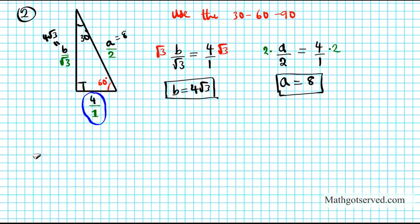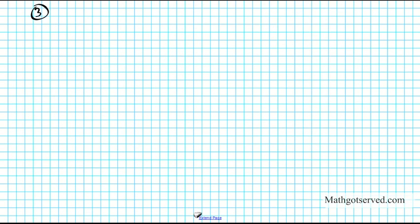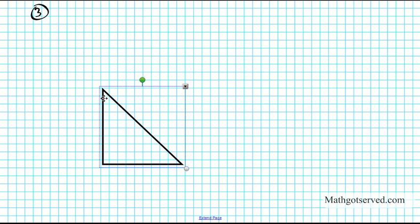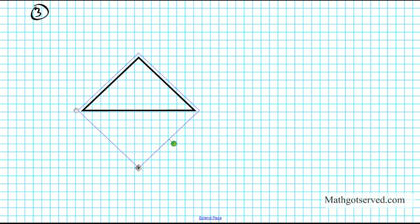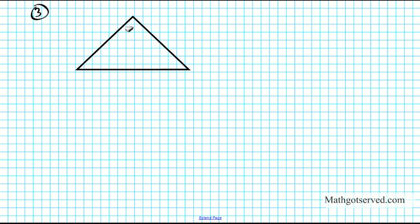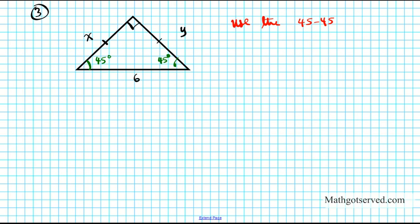Let's look at one more example — question 3. We have a right triangle with a 90 degree angle, sides labeled 6, x, and y. We're also told that two of the sides are congruent. If it's a right triangle and two sides are congruent, that means the base angles must be congruent — so each base angle is 45 degrees. We're going to use the 45-45-90 triangle to solve it.